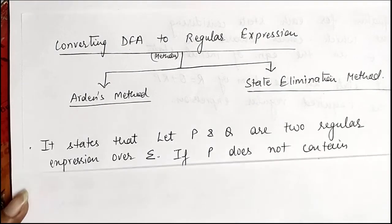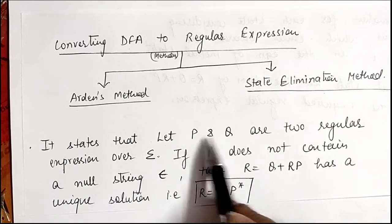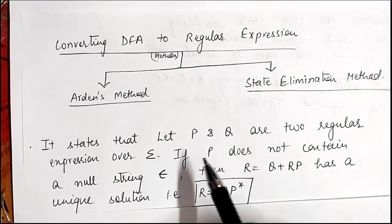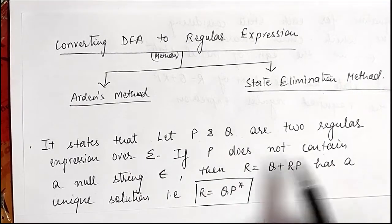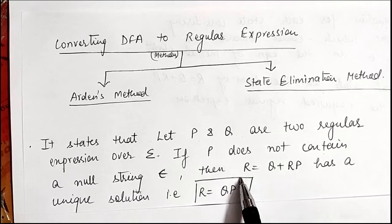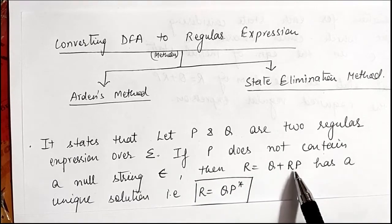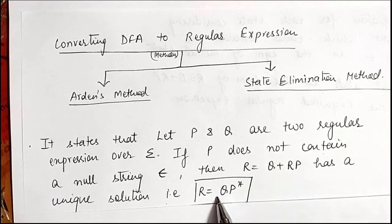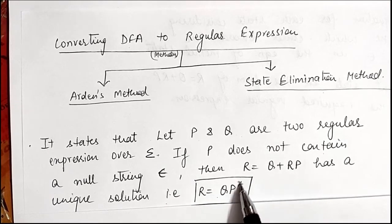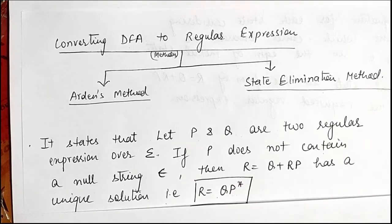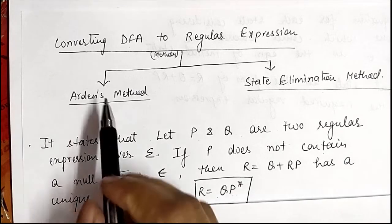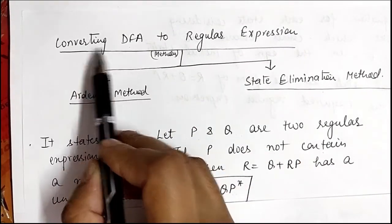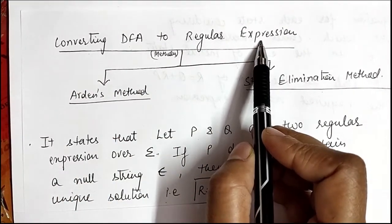Arden's method states that if p and q are two regular expressions over sigma, and p does not contain a null string (epsilon), then r = q + rp has a unique solution r = qp*. Both Arden's method and the state elimination method are used for converting a DFA into a regular expression.